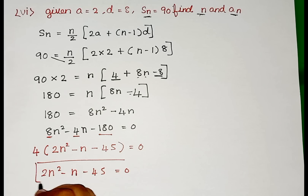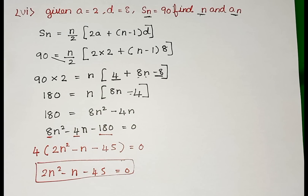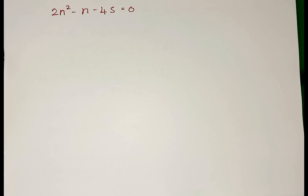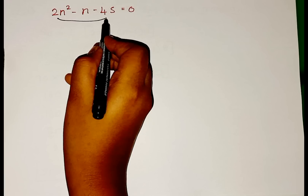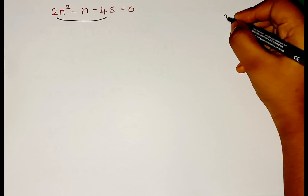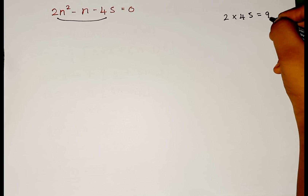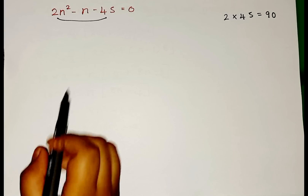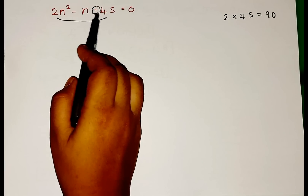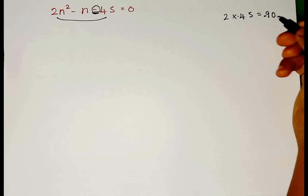So finally we got a quadratic equation. Since we got a quadratic equation, let us solve it — the same way we solved it in Chapter 4. First, multiply the first coefficient and the last number: 2 into 45. We have to take only the coefficients. But remember the signs are important — here we have a minus sign, so it is minus 45. So 2 into minus 45 is minus 90.